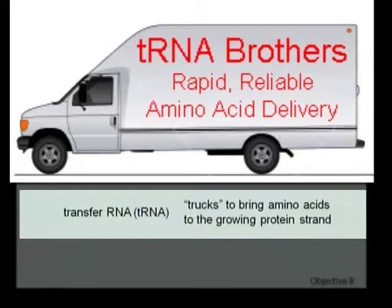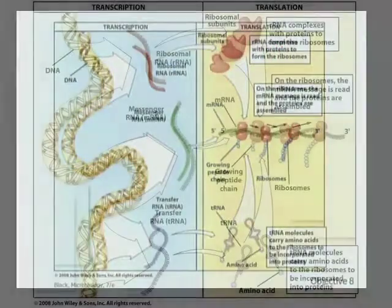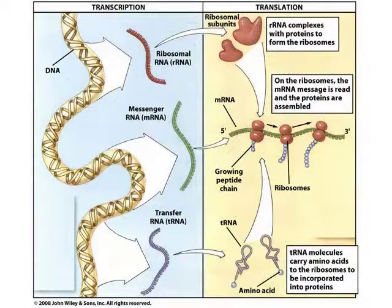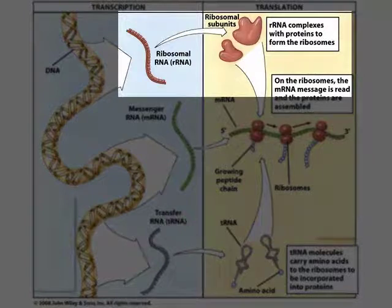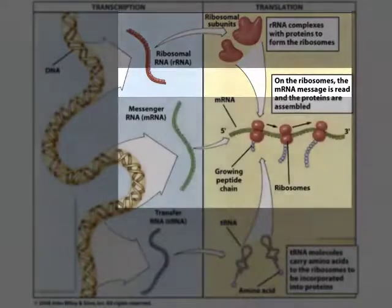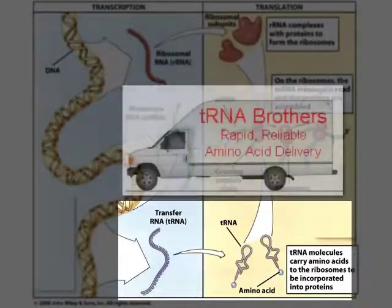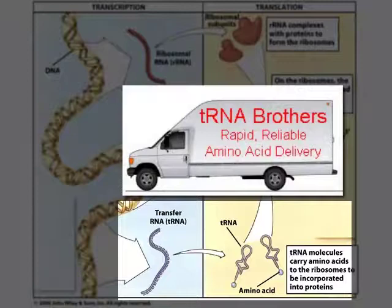Remember, the raw materials — the monomers for making a protein polymer — are the amino acids. The role of these three different forms of RNA is shown in this slide. rRNA collaborates with proteins to form small and large ribosomal subunits that, when assembled, form the translation machinery. Messenger RNA carries the coded information, which is translated into protein. And transfer RNA are the little trucks bringing in the amino acids being added to the growing polypeptide strand, which may eventually form a protein — the polymer of amino acids.